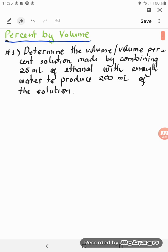Let's take this problem for example. Determine the volume or volume percent solution made by combining 25 ml of ethanol with enough water to produce 200 ml of the solution.